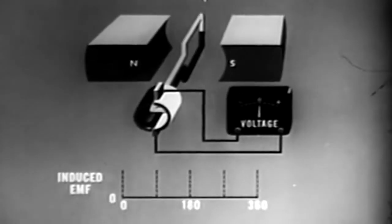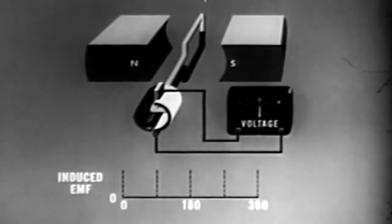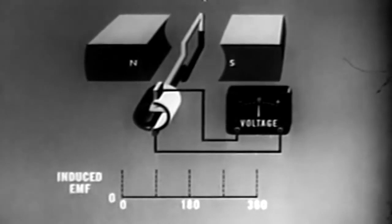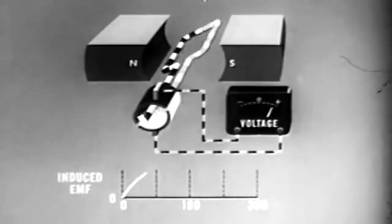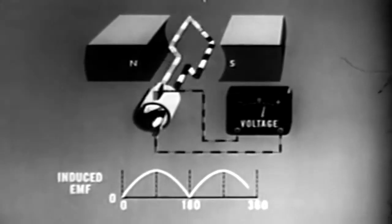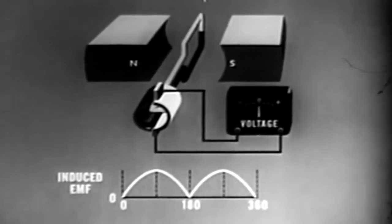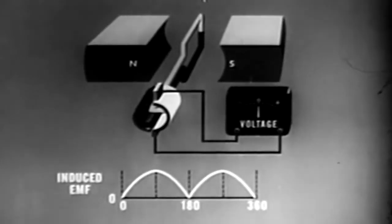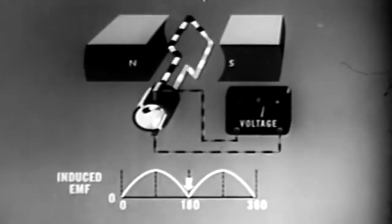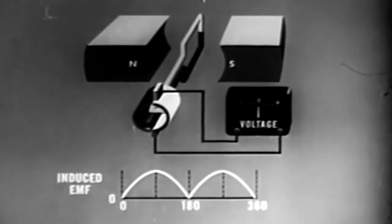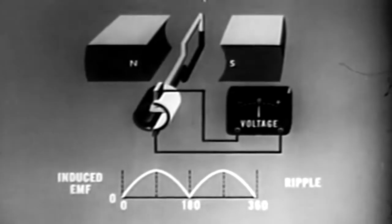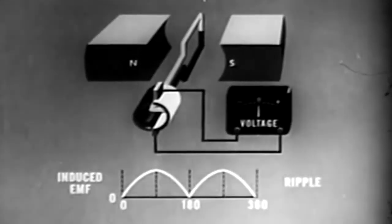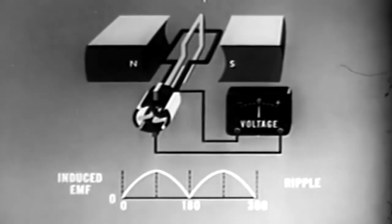Represented graphically, the output amplitude still varies. The DC is in the form of pulses — it is a pulsating direct current, or PDC. The pulsation from zero to maximum twice for each revolution of the loop is called ripple. This ripple can be reduced by adding more loops and more commutator segments to the existing armature.